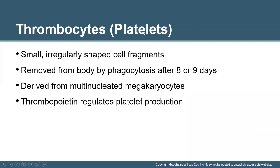Thrombocytes are platelets. Thrombopoiesis is the production of platelets, and these are small cell fragments removed from the body by phagocytosis after eight or nine days. They are derived from a cell called a megakaryocyte, a giant cell that anchors itself within a vessel. The current blood flow rips pieces of this cell's cytoplasm off, and these become platelets, which are then involved in the actual clotting process. A substance called thrombopoietin regulates platelet production.